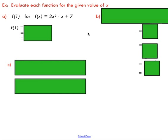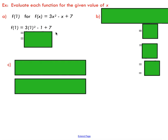Just another example: we're going to treat this like any other function. We take f(1) and substitute one in for x everywhere we see it. One squared is one times three, we subtract one and add seven, and end up with nine.